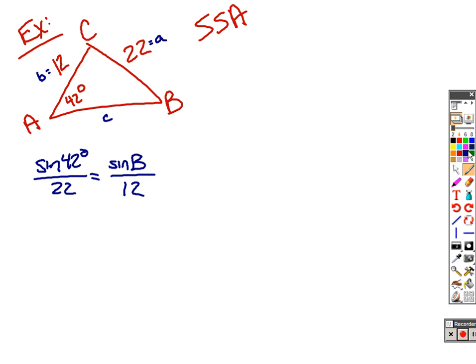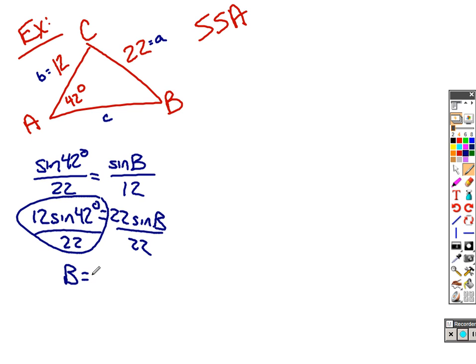First one, right here with this triangle, we already kind of have it set up. Sine of 42 over 22, because we know both pieces of A. We know side B, we need to find angle B. We'll say that 12 sine of 42 degrees is going to equal 22 sine of B. When we solve that, you'll have to divide both sides by 22. And that means that sine of B would be equal to this value right here. And when we take the inverse sine, you should get that angle B equals 21.4 degrees.